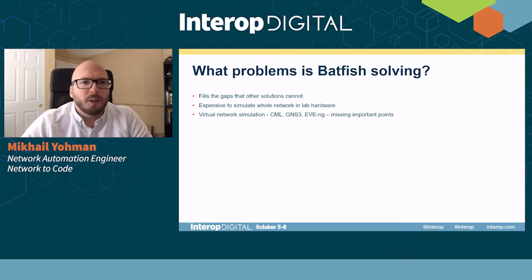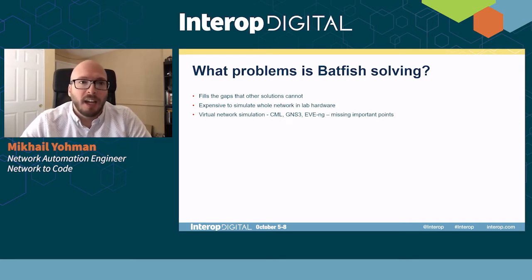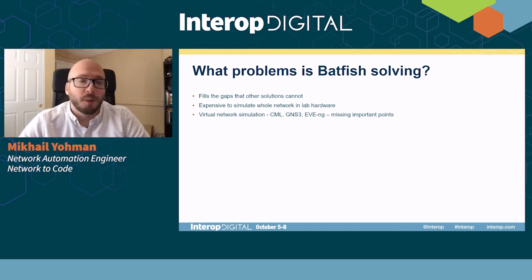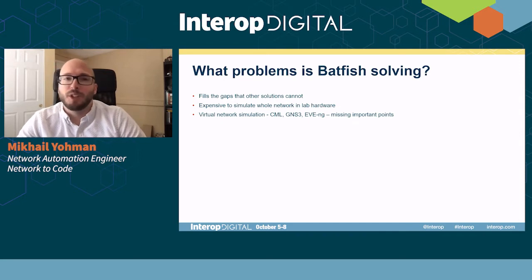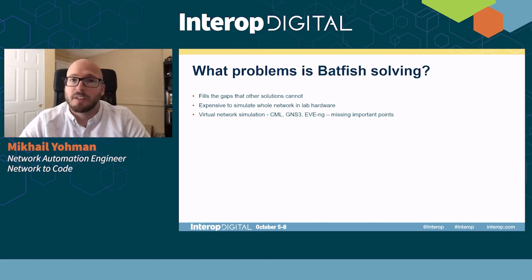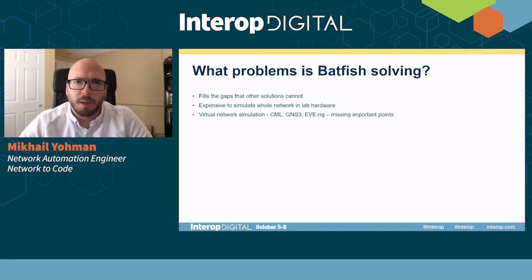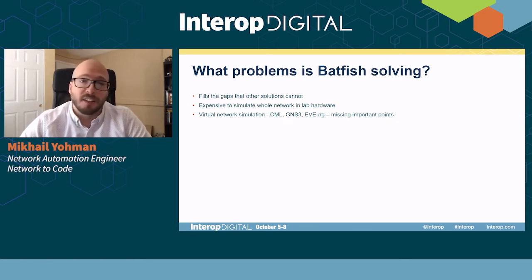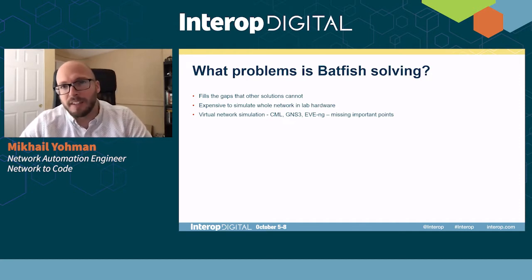To go into what problems Batfish is solving, what are existing solutions for testing? Right now, a lot of people test in production, just because the cost is prohibitive to mirror your production environment in a lab with all the hardware. Maybe you're testing on versions or some hardware-related features, layer two features. You could also be doing virtual network simulation using Cisco Modeling Labs or GNS3, but those only cover specific aspects. You can't model the hardware-level stuff in that for the most part.